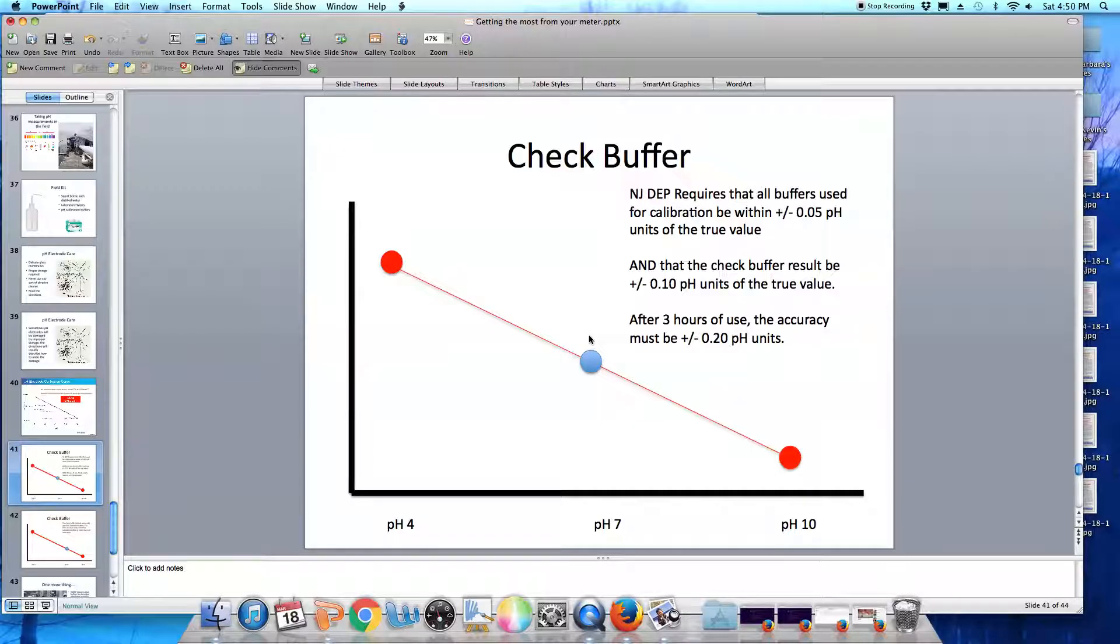We could also use pH 6 or pH 8 as our check buffer as long as the check buffer has a pH value between the two buffers that we use for calibration.